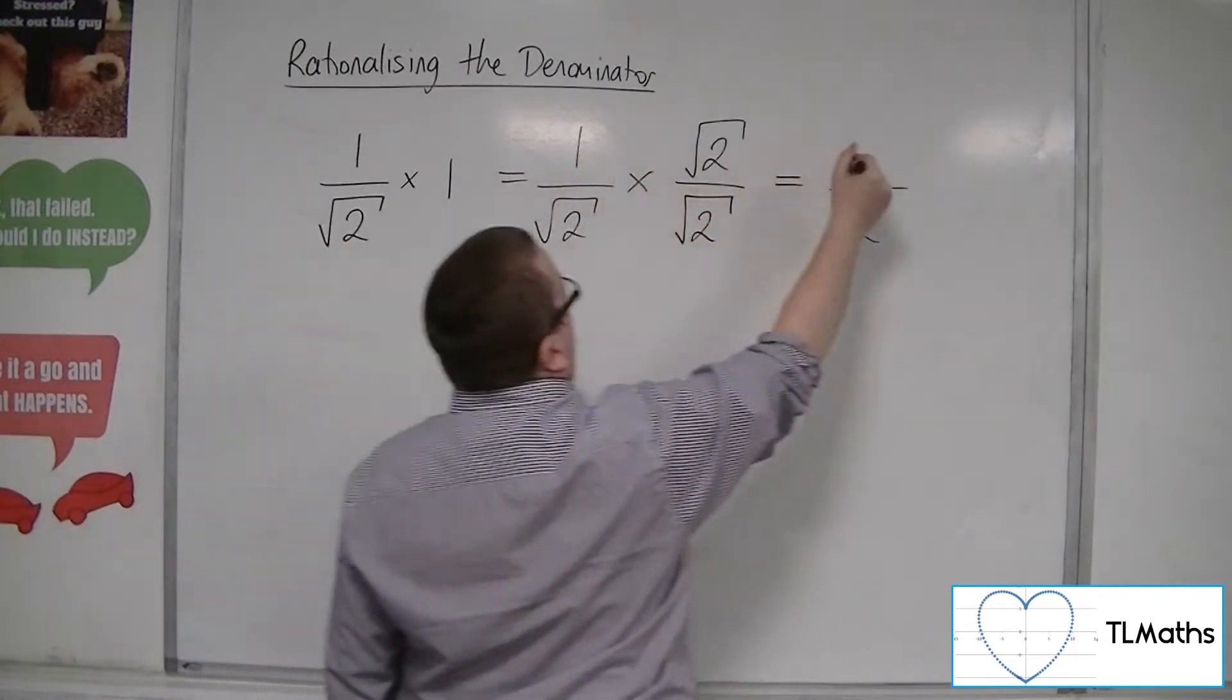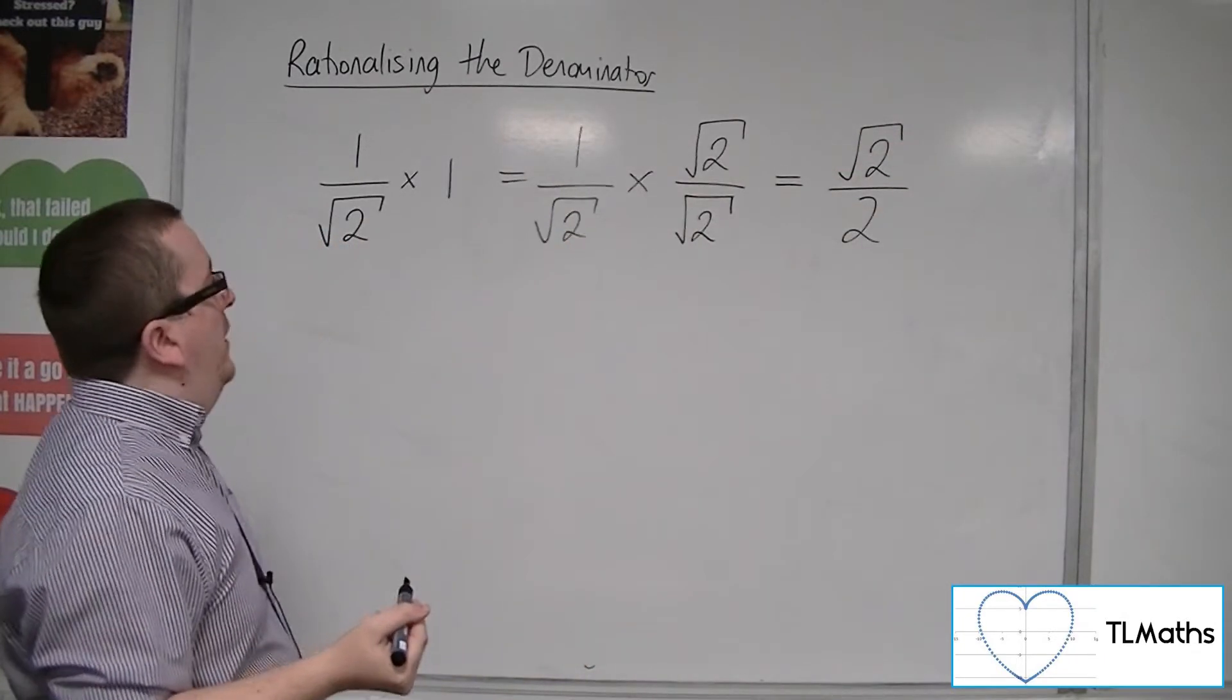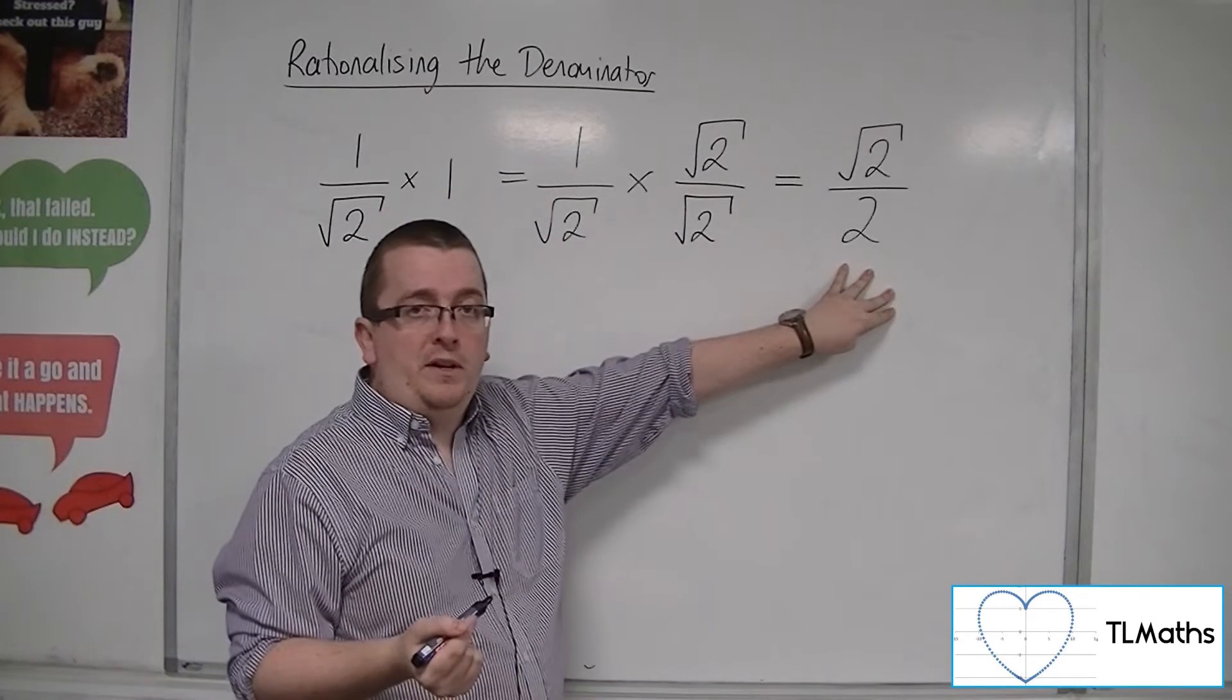1 times root 2 is root 2. So 1 over root 2 is the same as root 2 divided by 2.